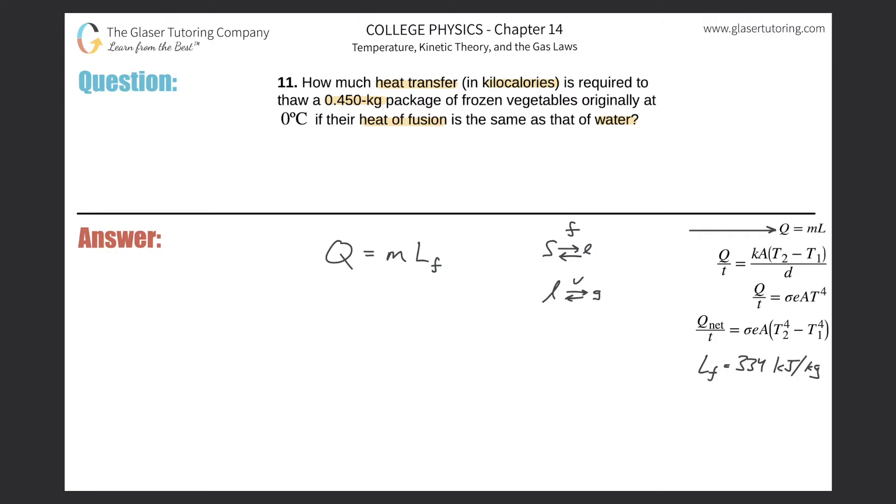All we're going to do is just plug stuff in. The heat here will be equal to the mass they gave us, 0.450, multiplied by the latent heat of fusion of water, and that's 334 kilojoules per kilogram. You can plug that value into this equation. Just remember when you calculate you're going to get out kilojoules here.